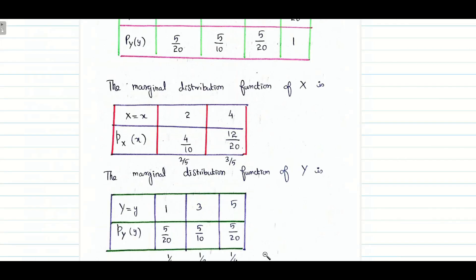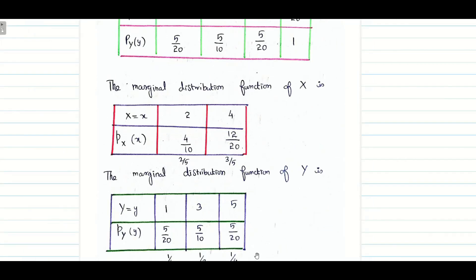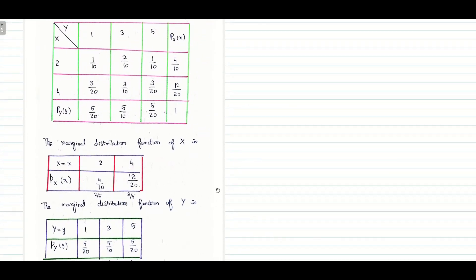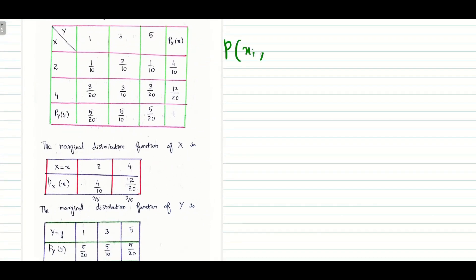Once this is done, we are going to check for each and every value of X, Y whether it is satisfying the condition. Probability of (xi, yj) equals probability of xi times probability of yj. If this condition is satisfied for all the values in the table, then I conclude X and Y are independent. Even if one set of values is violating the rule, then I will say X and Y are dependent.